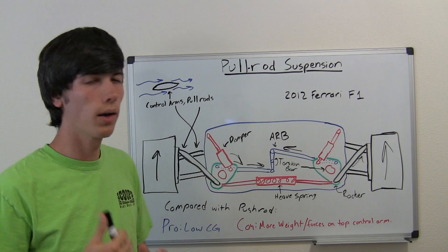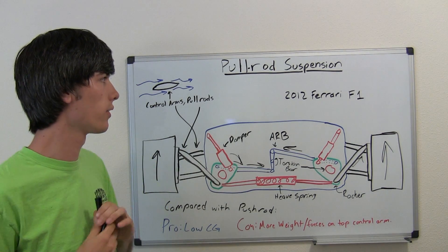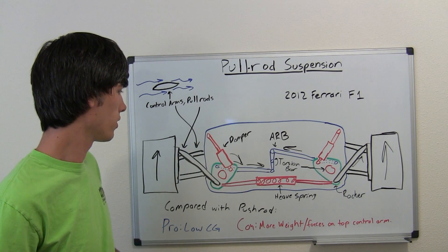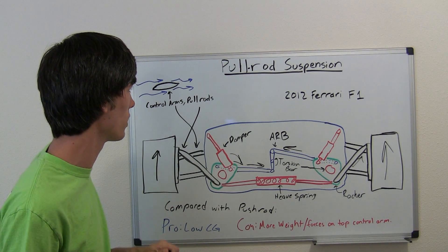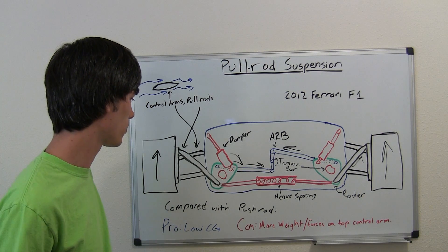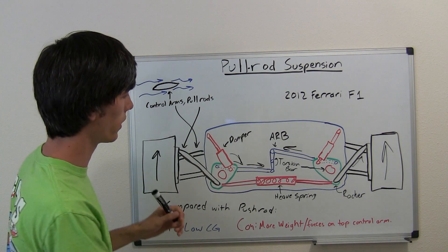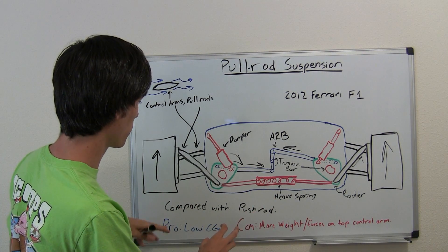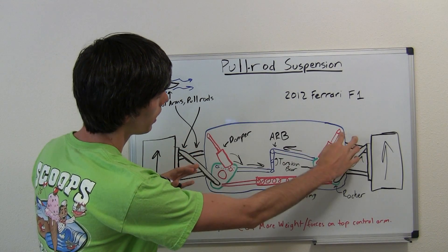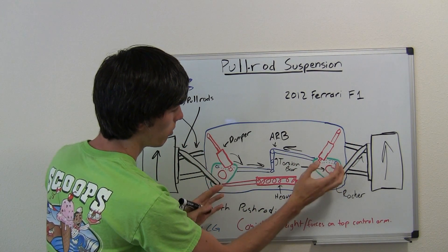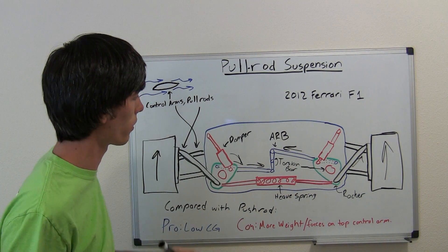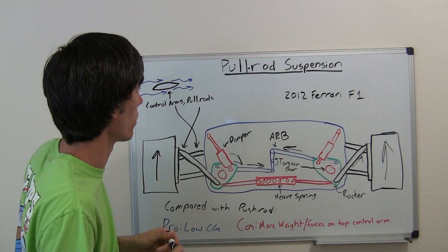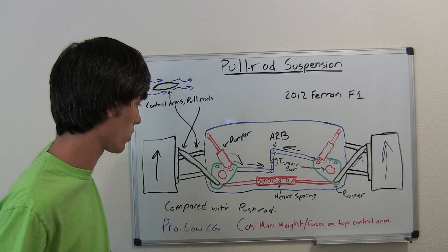So why would you use a pull rod suspension? Well, really you should only compare it to a push rod suspension because that's what it's competing against. And the reason it's used is because unlike the push rod suspension where all the components were up top, on the pull rod suspension all the components are down the bottom. So you lower your center of gravity of the car, which of course is greater for your weight transfer so you can have some better handling characteristics from your car.